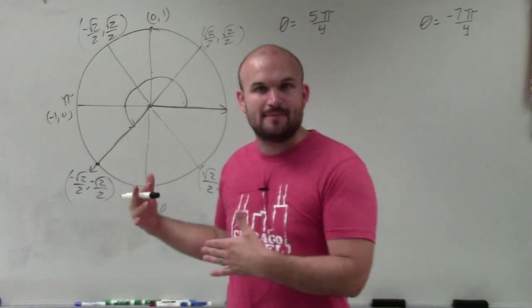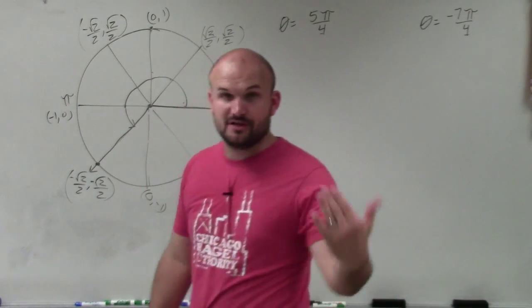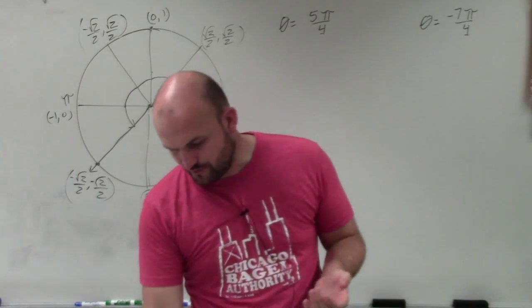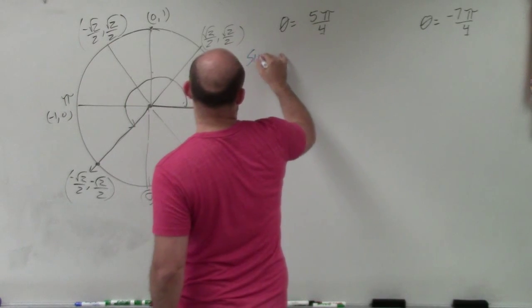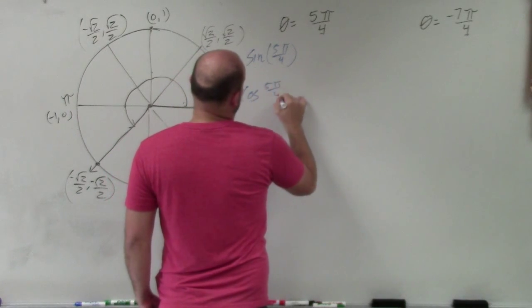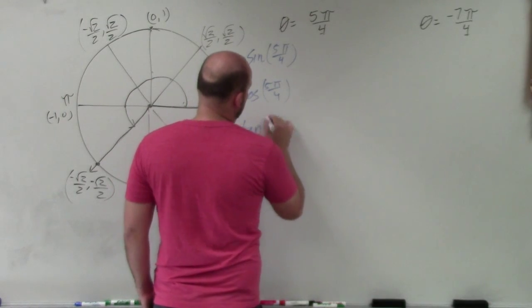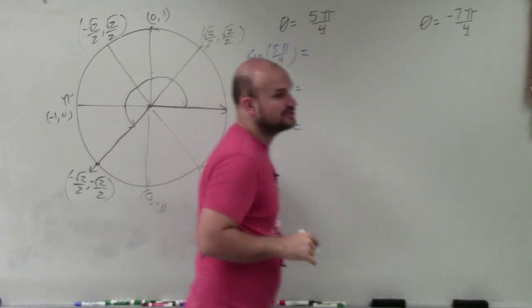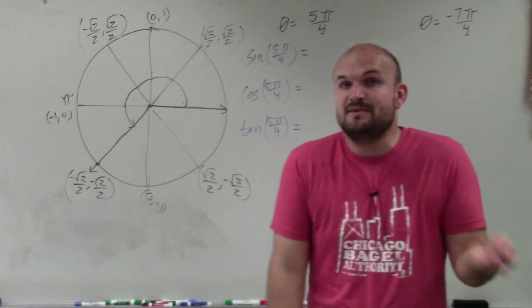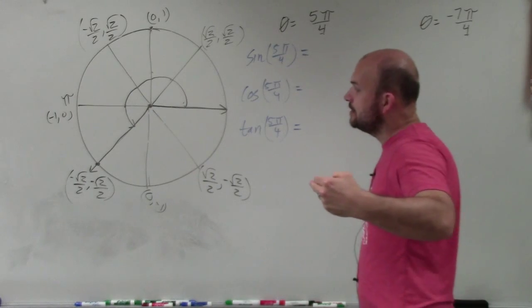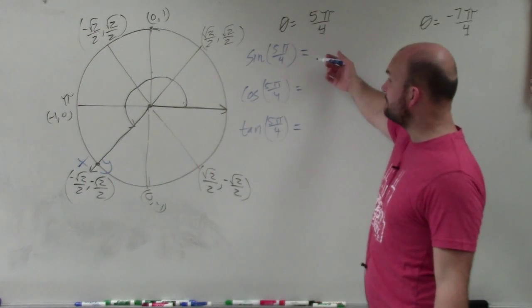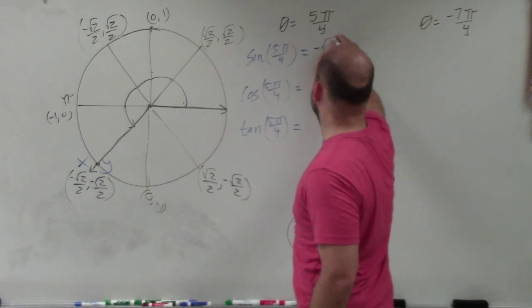You can pull out a unit circle to see where that point comes from, or check another one of my videos where I explain how to get it. Now we need to evaluate our six trigonometric functions. Sine of 5 pi over 4 is simply the y-coordinate of the intersection point on the unit circle, which is negative square root of 2 over 2.